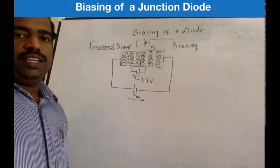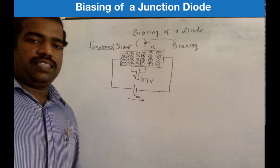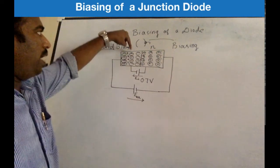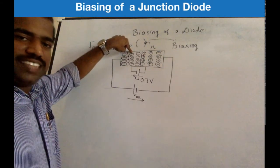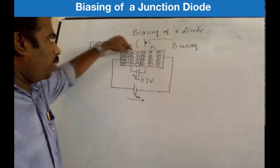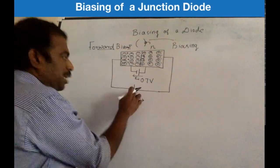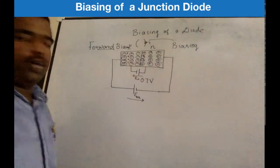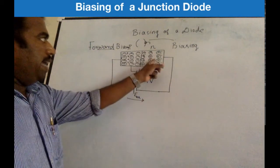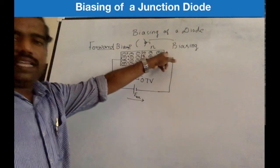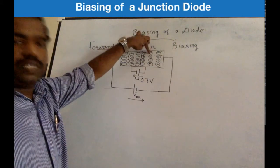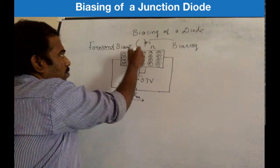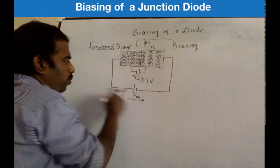In this way, holes are created in the P-side region. If you increase the voltage, more and more covalent bonds are broken and more and more electrons are supplied by the positive terminal of the battery. The negative terminal of the battery will get more and more electrons from the n-side. The P-side will regain its surface charge.